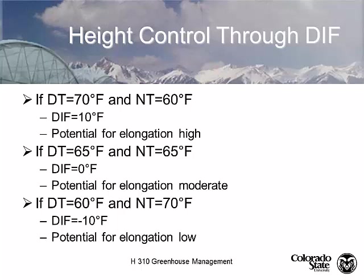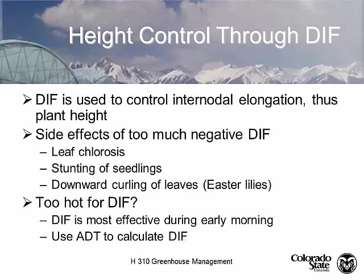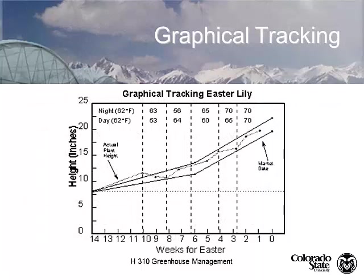Some of the side effects of too much negative DIF: plants get chlorotic, seedlings are stunted, and there's downward curling—epinasty—which is actually an ethylene response. Some growers will use a very strong DIF of minus 30 or 40 degrees, but only for about 15 to 20 minutes just as the sun comes up, because photosynthetic activity is greatest right at sunrise. Applying DIF at that point is all you need to control plant height. A lot of plug growers and vegetable transplant growers do this.